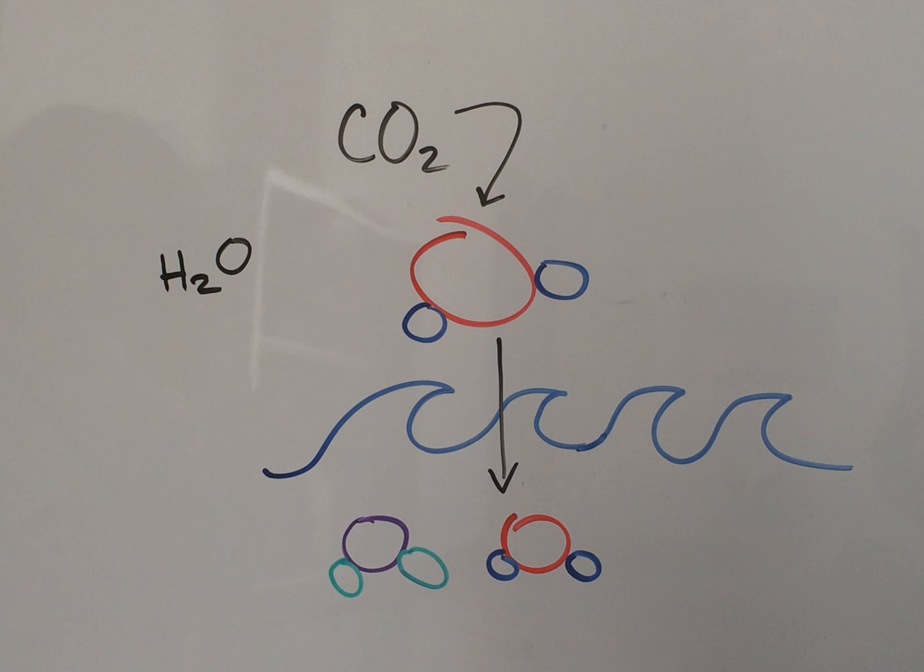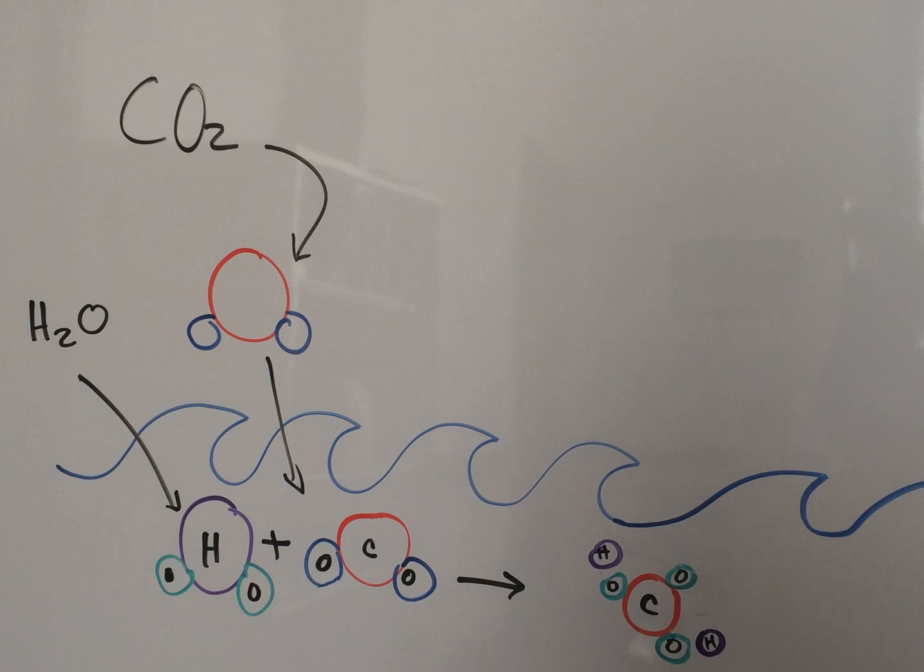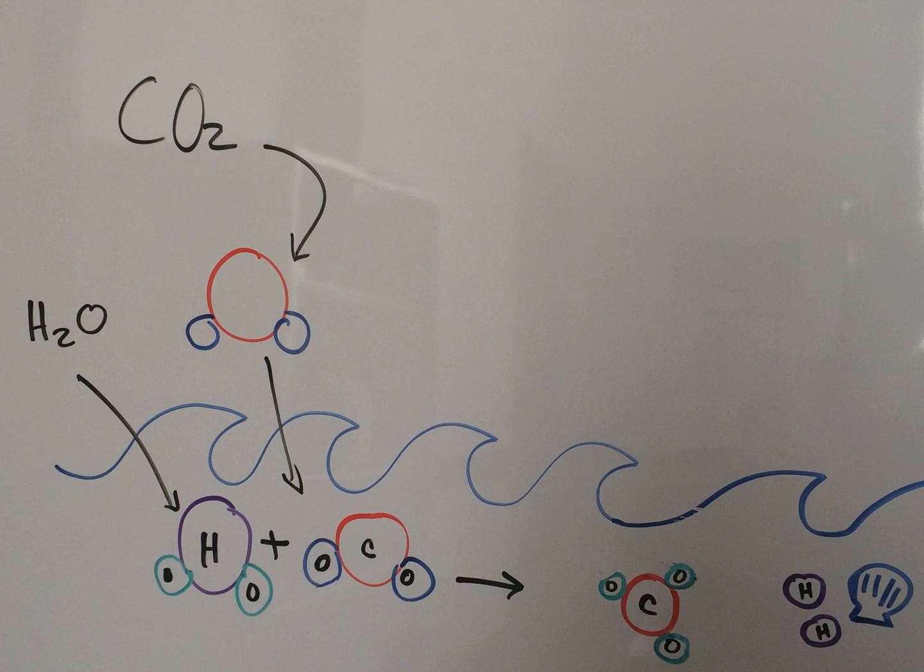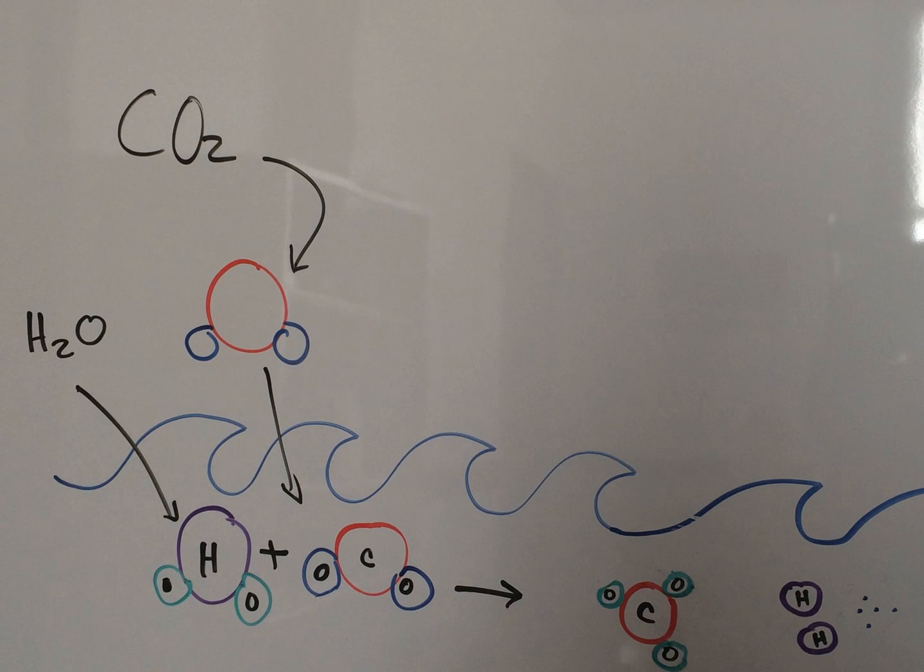When the carbon dioxide meets the water, it reacts and forms carbonic acid. Each molecule of carbonic acid then releases two hydrogen ions, which increases the acidity of the water, and in turn dissolves the calcium carbonate of shells and exoskeletons of sea creatures.